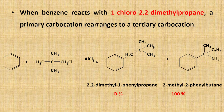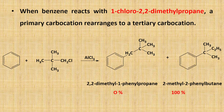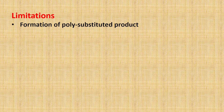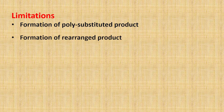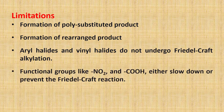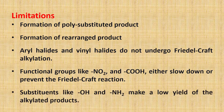Friedel-Crafts alkylation suffers from some practical limitations. As discussed, alkyl-substituted benzene is more reactive than benzene, so formation of polysubstituted products is always observed. Carbocation rearrangement leads to formation of rearranged products. Aryl halides and vinyl halides do not undergo Friedel-Crafts alkylation. Functional groups like nitro and carboxylic acid either slow down or prevent the Friedel-Crafts reaction. Substituents like hydroxy and amine make a low yield of the alkylated product.